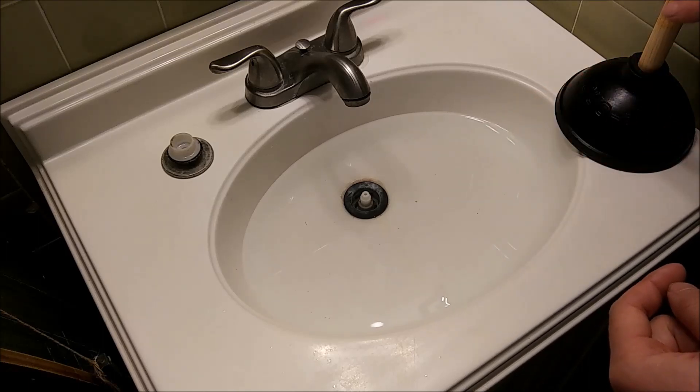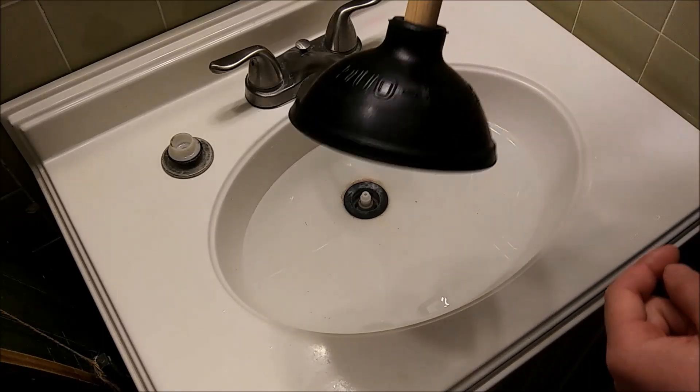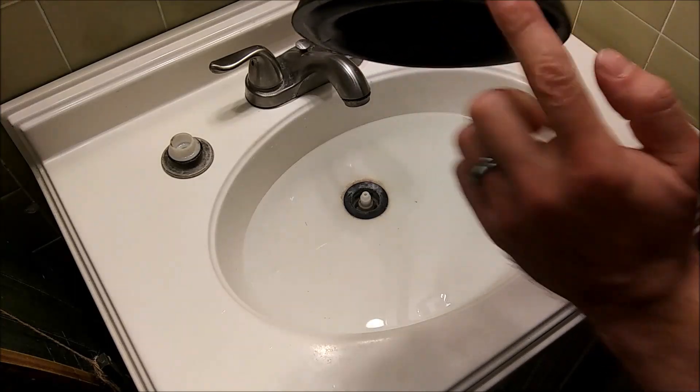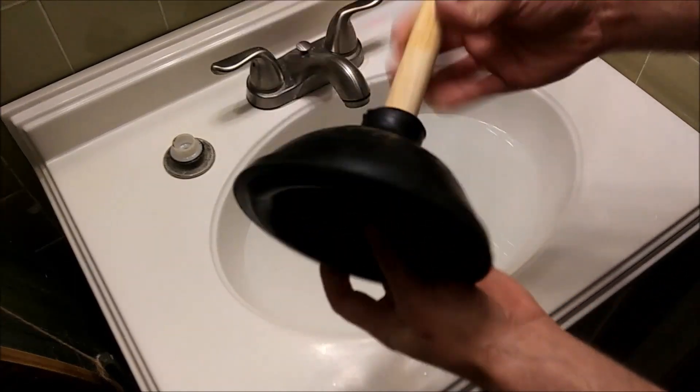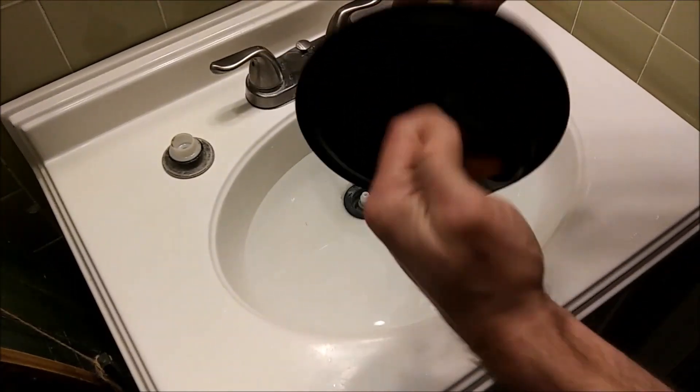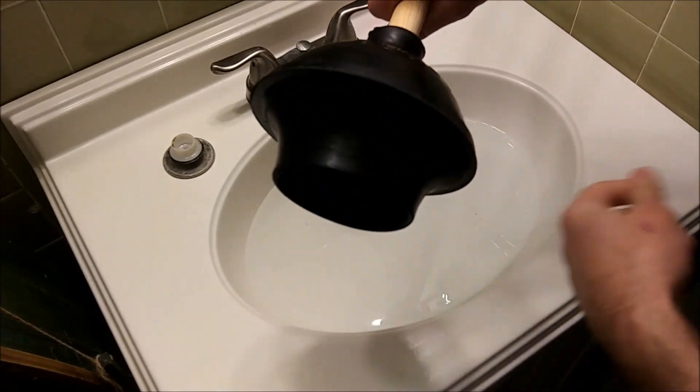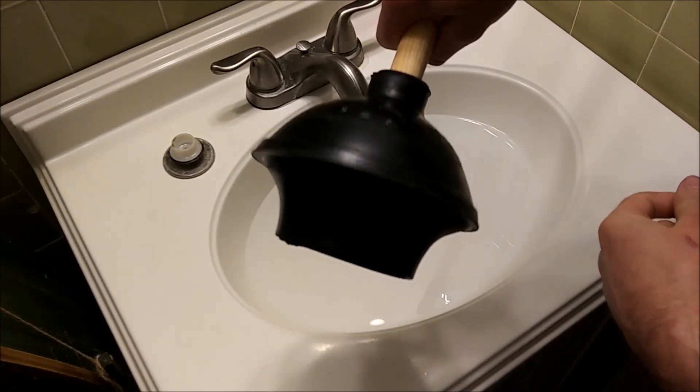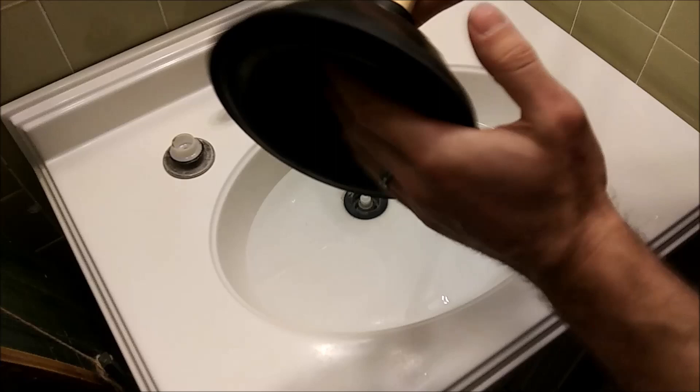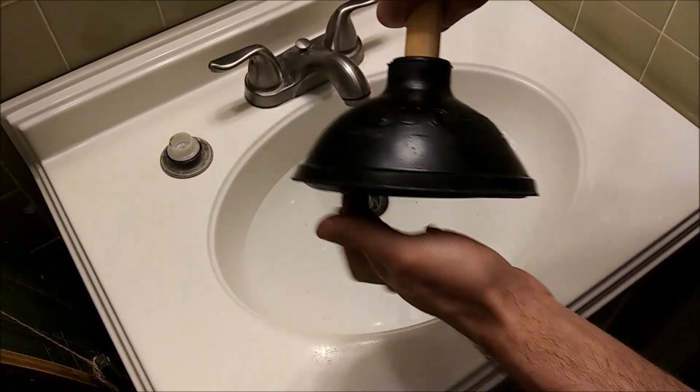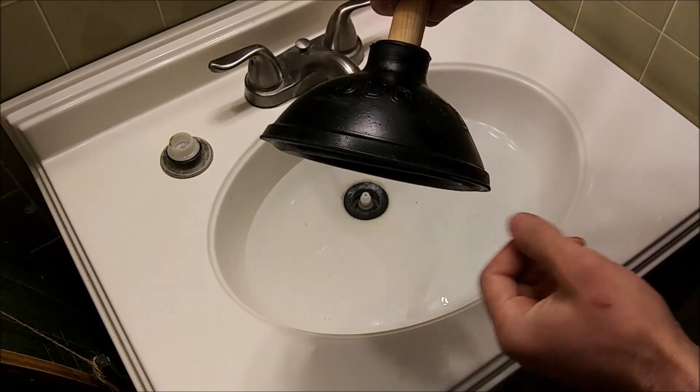If your drain's clogged up, here's a quick tip on how to get it unclogged. Grab a plunger that's shaped like this or flat along the bottom. If it looks like this, you have the wrong plunger—this is for a toilet. If you try using a plunger that's flat for a toilet, it's not gonna work.